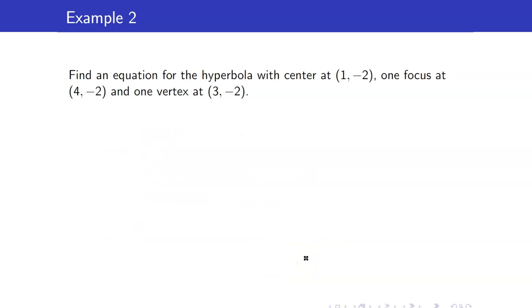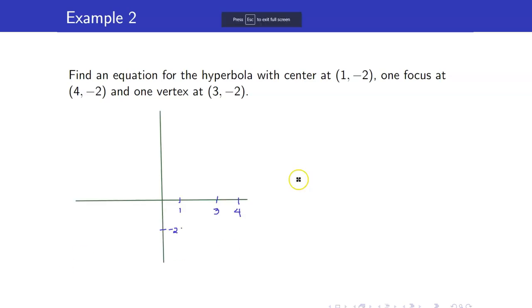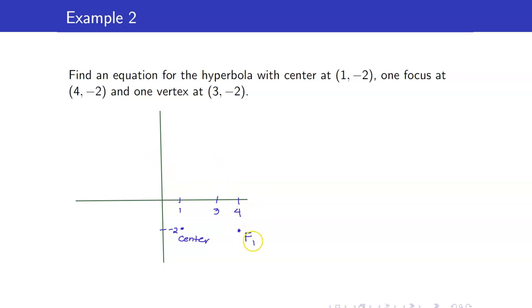Next, let us find the equation of the hyperbola with center at (1, -2), one focus at (4, -2), and one vertex at (3, -2). Let us plot the points that were given to us. Our center is at (1, -2), one focus at (4, -2) — let's call this F1 — and one vertex at (3, -2), let's call that V1.